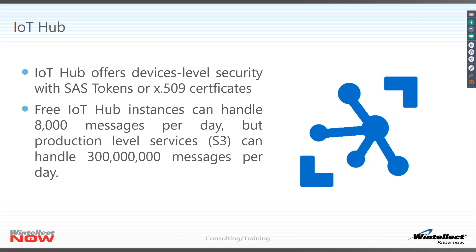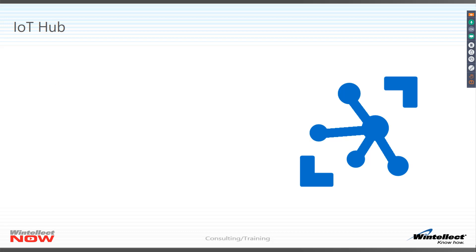IoT Hub has other features built into it, including device-level security with SAS tokens or X.509 certificates. There are various tiers available: the free tier for development with up to 8,000 messages per day, all the way up to 300 million messages per day on the S3 tier. It's highly scalable, and Azure IoT has a lot of plumbing built in to make this work. You'll see how this all comes together as we look at the IoT Hub and demos.